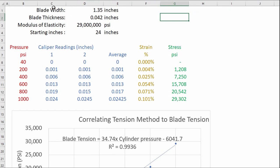Okay so I have put some parameters into an Excel spreadsheet here and then also put the results of the readings that I took when measuring blade tension. So first of all let's just talk about these parameters on the top here blade width 1.35 inches.